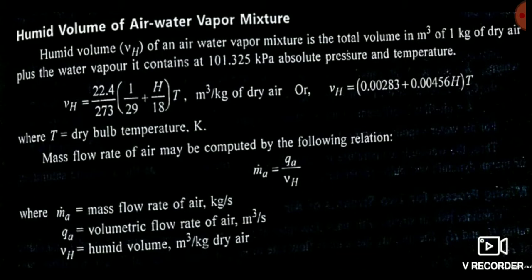Now see humid volume. The humid volume of an air-water vapor mixture is the total volume of 1 kg of dry air plus the water vapor it contains at 1 atmosphere (101.325 kPa) at absolute temperature. There are two formulas, both giving the same value. One is written in terms of fractions: VH = (22.4/273) × (1/29 + H/18) × T.